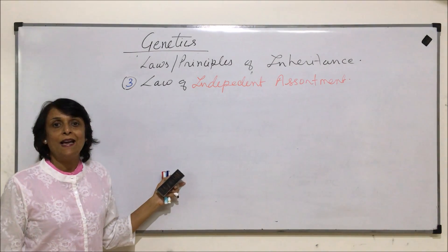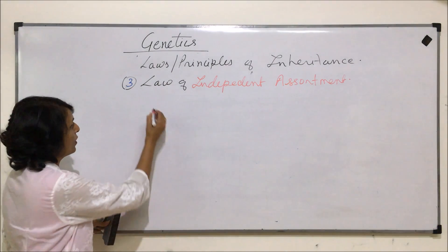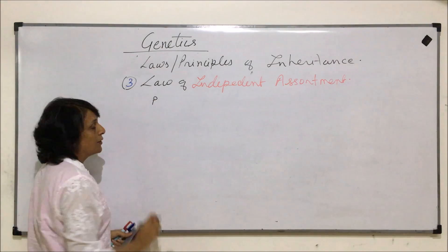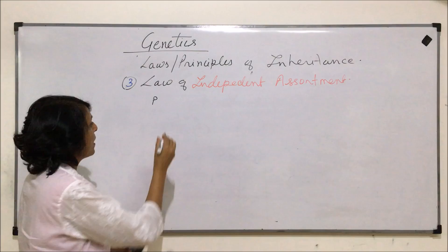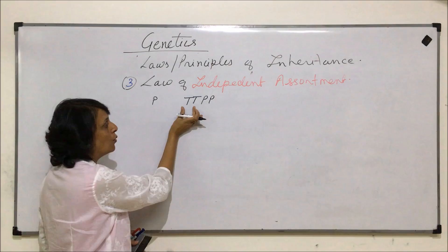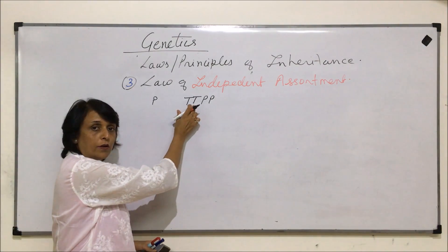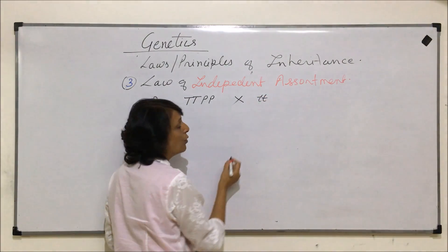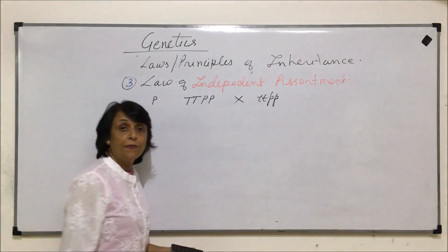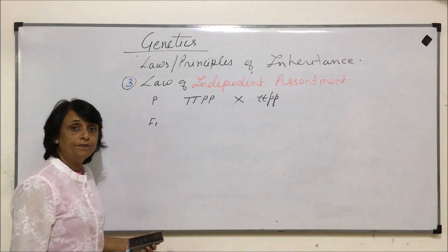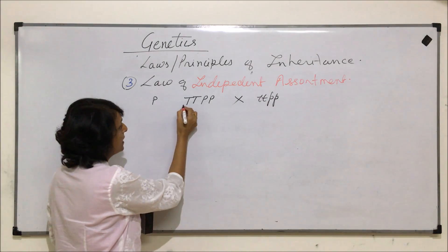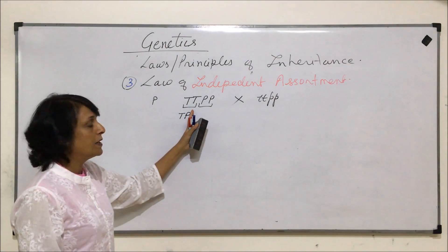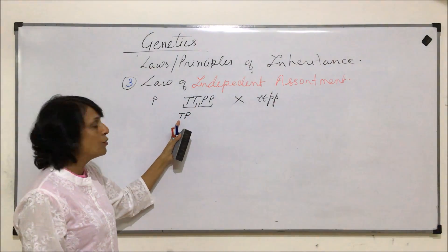We will start with a dihybrid cross to understand independent assortment. As per Mendel's laws, we start with pure line. So the parent generation will be pure for two characters. Say we are talking of tall and purple — this is homozygous tall and homozygous purple, crossed with pure short and white, meaning homozygous dwarf and homozygous white. For gamete formation in the homozygous tall-purple parent, the gamete would carry one T and one P — specifically capital T and capital P.